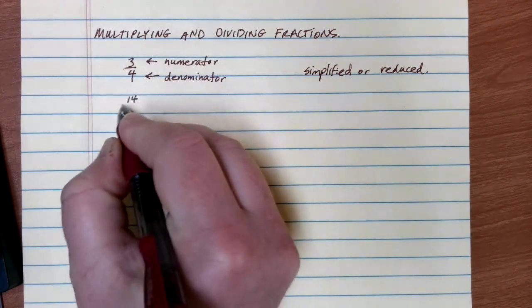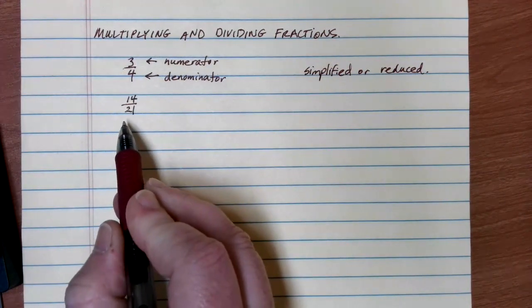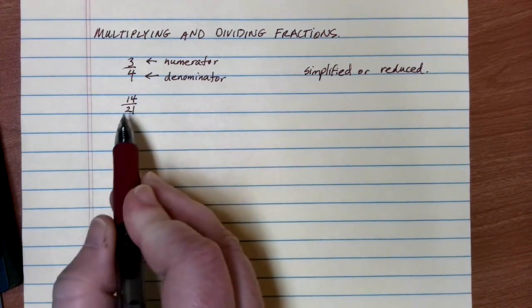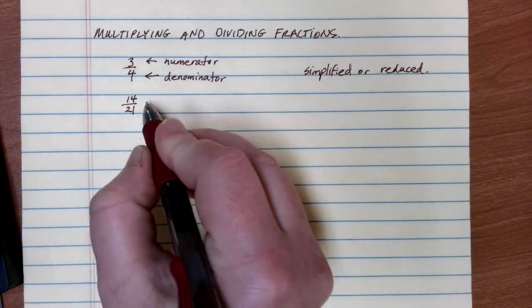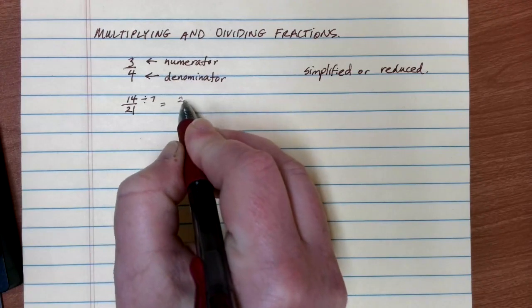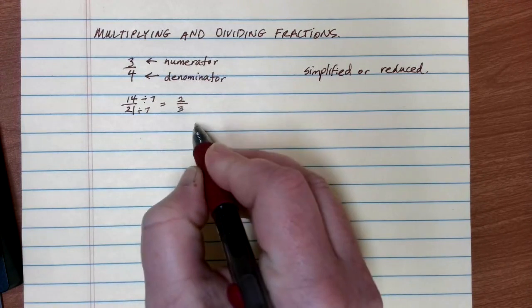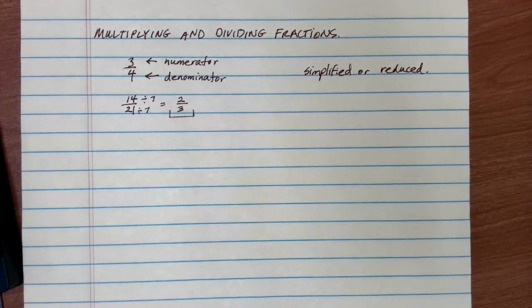Here's another example. Let's look at this fraction, 14 over 21. This is not an example of a reduced or simplified fraction because seven could be divided evenly into both the top and the bottom. If I divide the top by seven, I get two. If I divide the bottom by seven, I get three, and now two-thirds becomes a simplified and reduced solution.